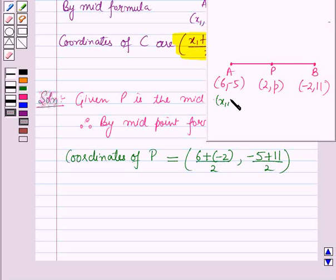Here, let this be x₁, y₁ and this be x₂, y₂, so the coordinates of P are (x₁+x₂)/2 and (y₁+y₂)/2.